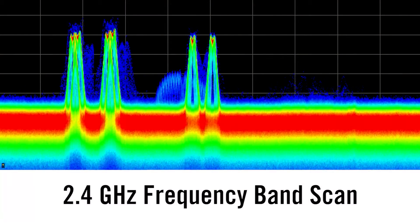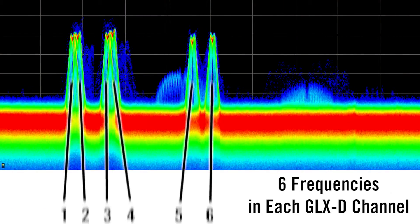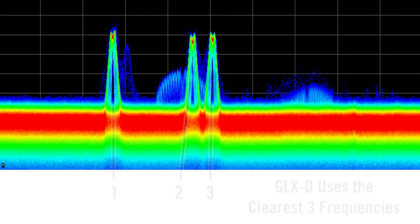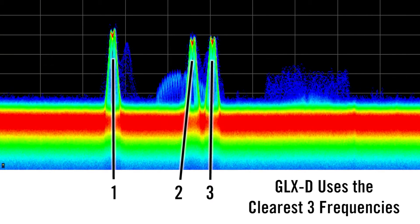Each channel of GLXD is made up of six frequencies which the system continuously scans to monitor their condition. It transmits the audio signal on the clearest three frequencies out of the six available.